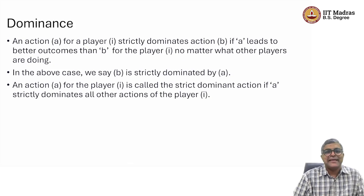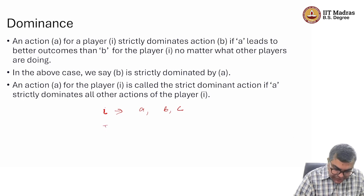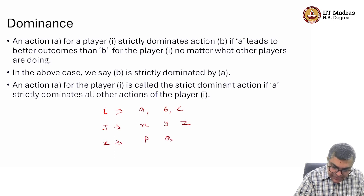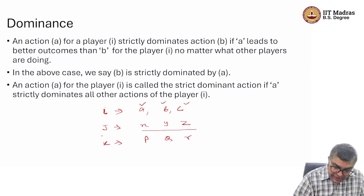We said that an action A for player I strictly dominates action B if A always gives a better outcome than B for player I, no matter what the other players are doing. So let us say player I has three actions A, B, and C; player J has actions X, Y, and Z; and player K has actions P, Q, and R. Player I is deciding whether to play A, B, or C, while J decides between X, Y, Z and K decides between P, Q, R.